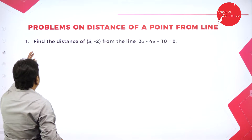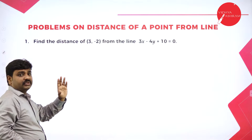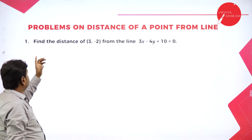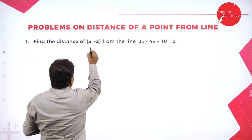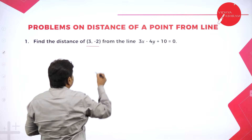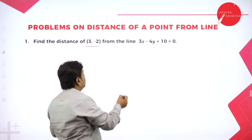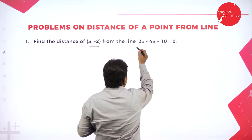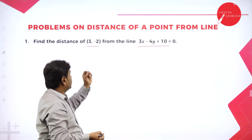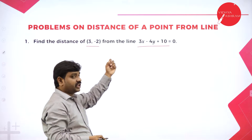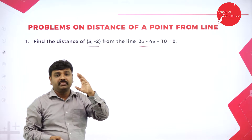So now, problems on distance of a point from a line. The first problem: find the distance of the point (3, -2) from the line 3X minus 4Y plus 10 equal to 0. They gave a point, they gave a line, and they want you to find the distance of the point from the line.